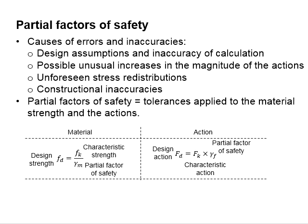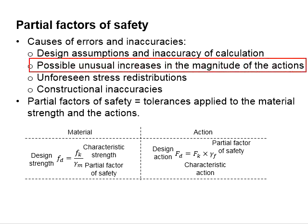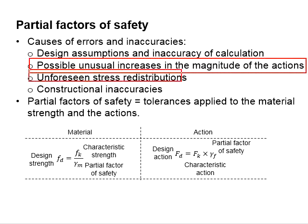Partial factors of safety. The causes of errors and inaccuracy during the analysis of reinforced concrete structures can be due to the design assumptions and inaccuracy of the calculations. Also, it can be due to the possible unusual increase in the magnitude of the actions, unforeseen stress redistribution, and construction inaccuracy.